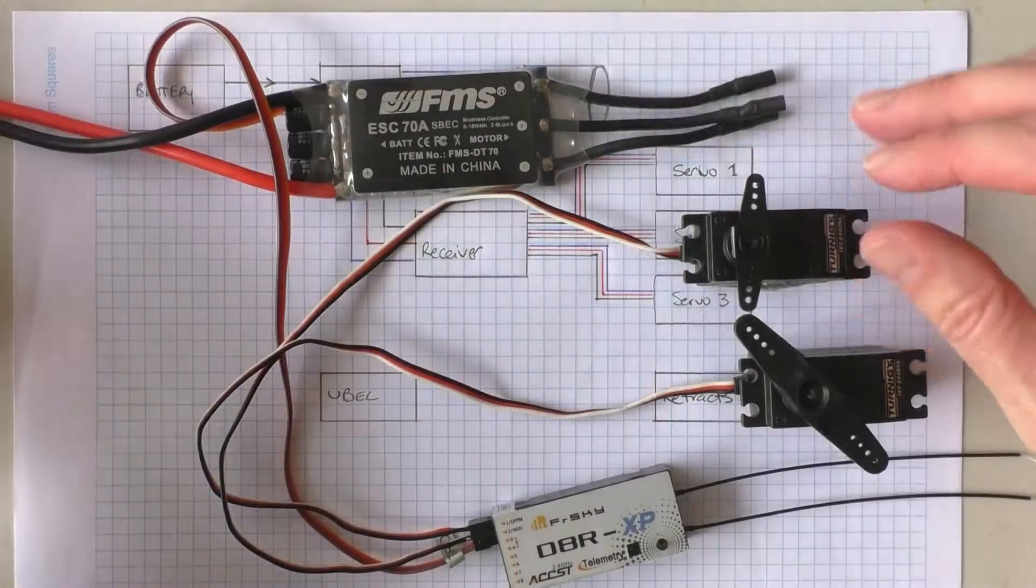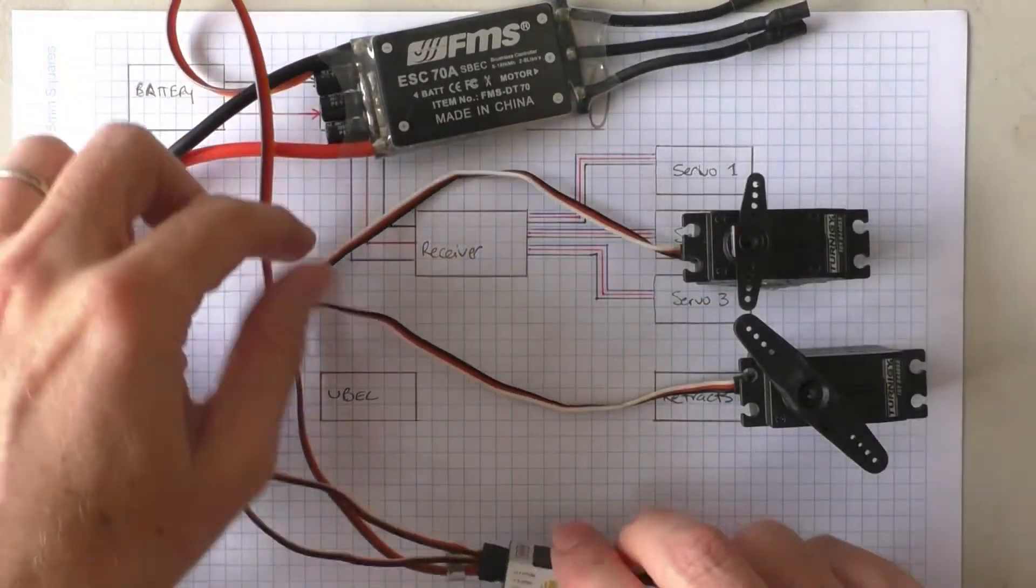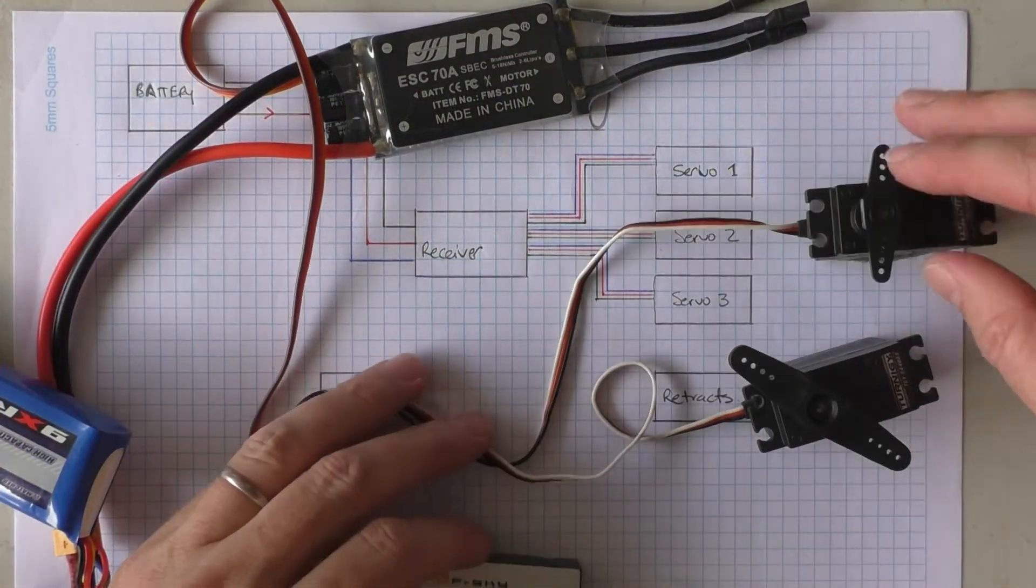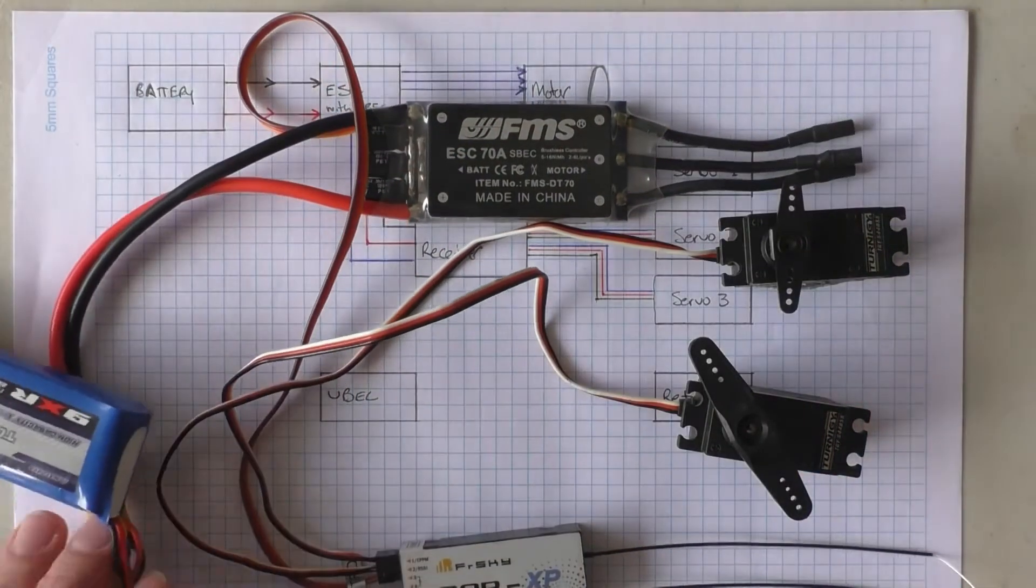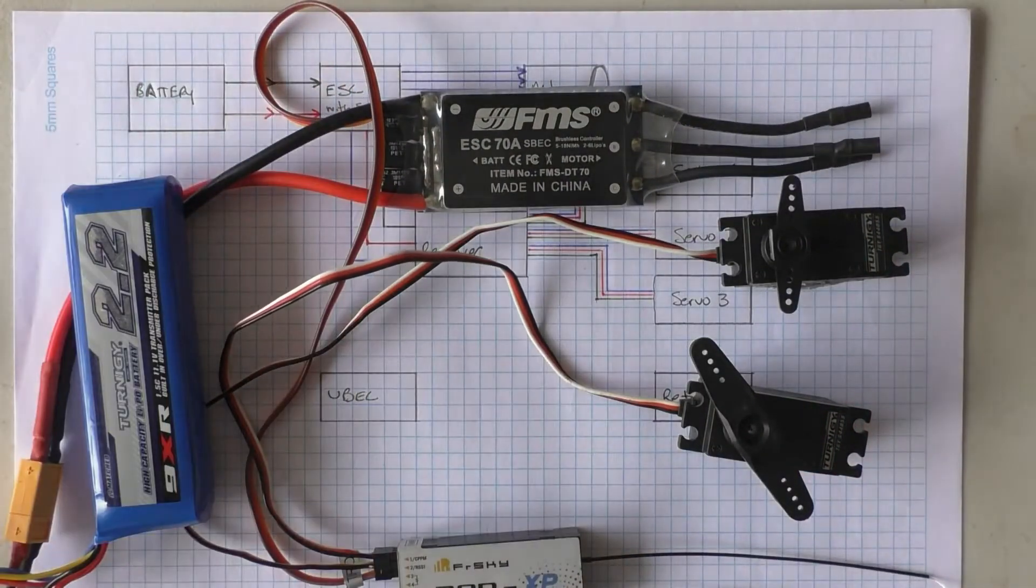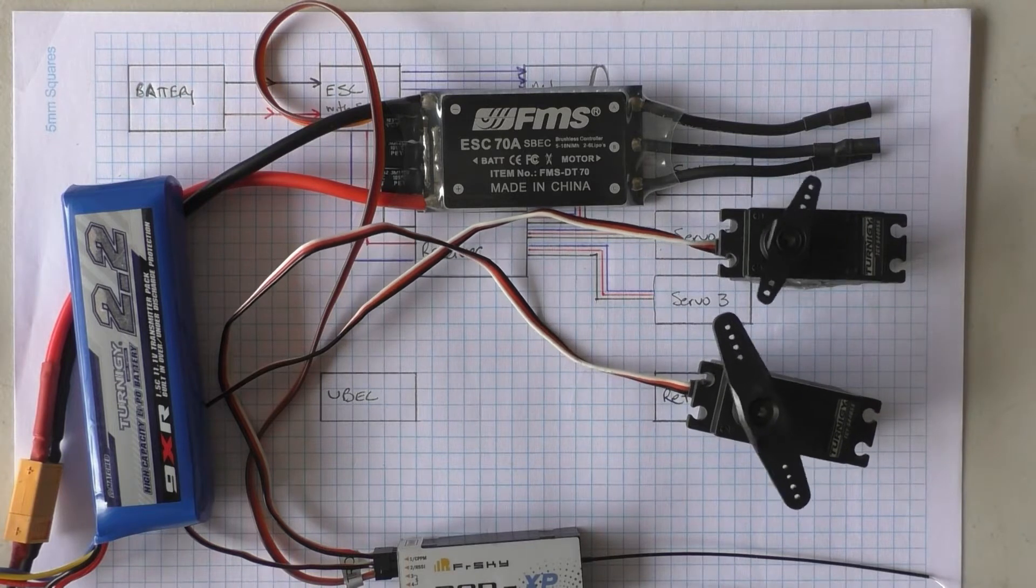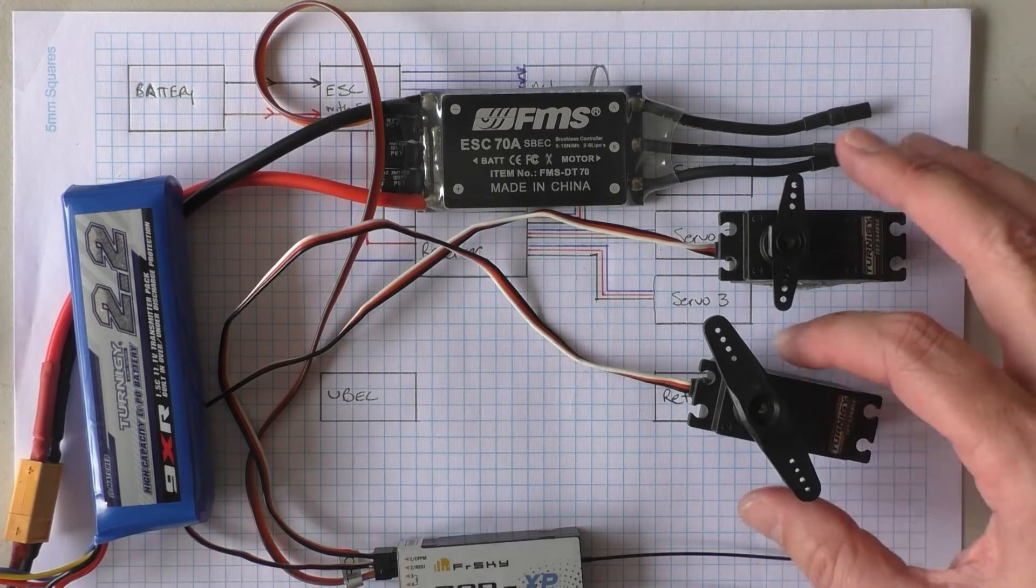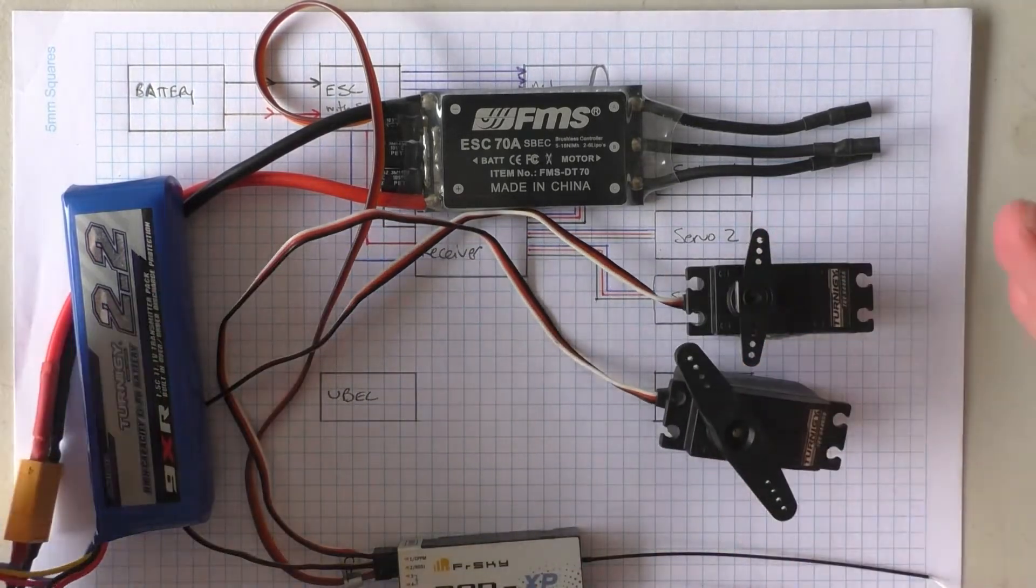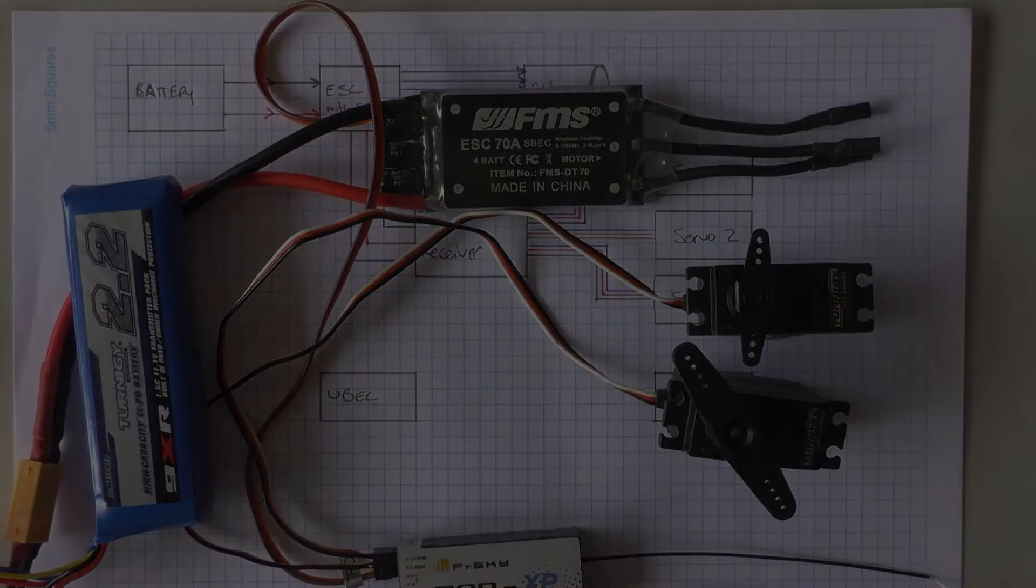So just to quickly show you that all this is working, apologies for all the wires. So this is now all powered up, and obviously when I move my controls, I'm getting power and signal through to the servo. So this is how it would normally be set up. So let's put the UBEC into play now.